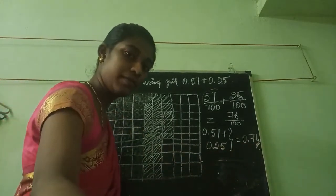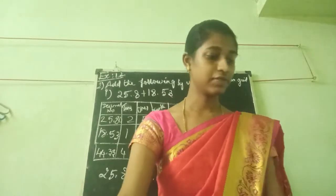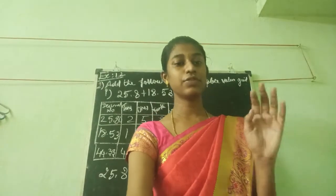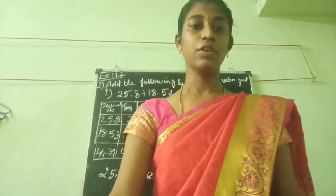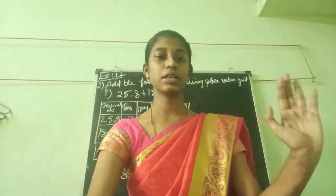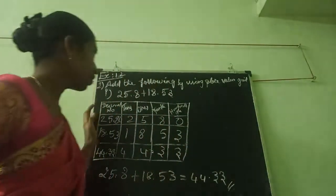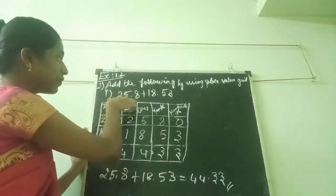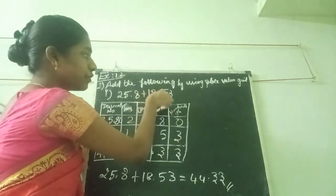We are going to see about the second sum. I am reading the question: add the following by using place value grip. In the first we do the grip model. Now we are going to see about place value — in previous term you have studied the place value, like 1, 10, 100. Like that we are going to put the boxes. The question is 25.8 plus 18.53.